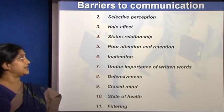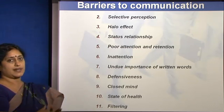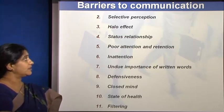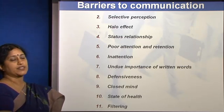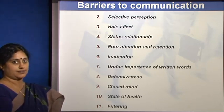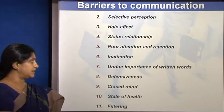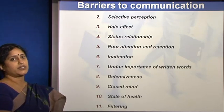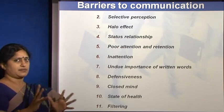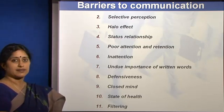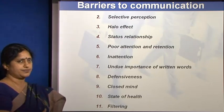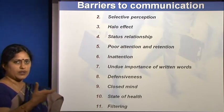Qualities of credibility and charisma play a role, as does selective perception — only listening to what one wants to hear. The halo effect applies when you are in awe of or dislike a person. Status relationships between boss and subordinate, poor attention and retention, being a poor listener, undue importance placed on written words, defensiveness when unsure, a closed mind, state of health such as having a headache or fever, and filtering — again only hearing what one wants — are all individual barriers.